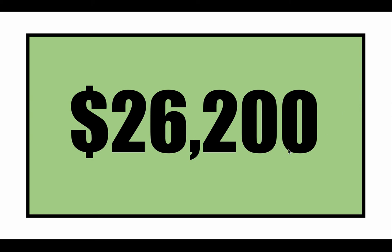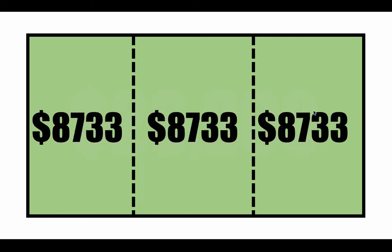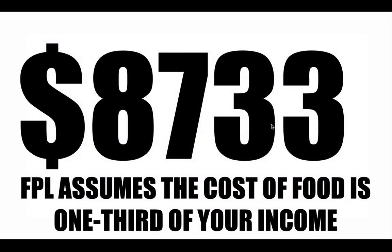If we work backwards from that assumption, we ask: what did they multiply by three to get this number? You just divide by three. So you take $26,200 and divide it by three, and you get about $8,733. That is the assumed cost of food — one out of three pieces that make up that total. It's assuming a family of four spends $8,733 on food every year.